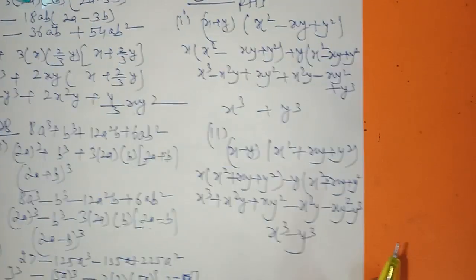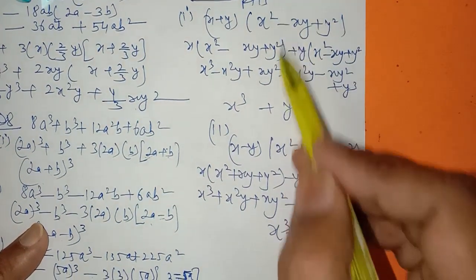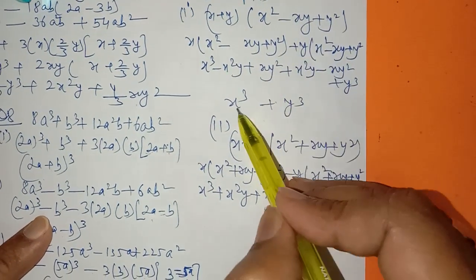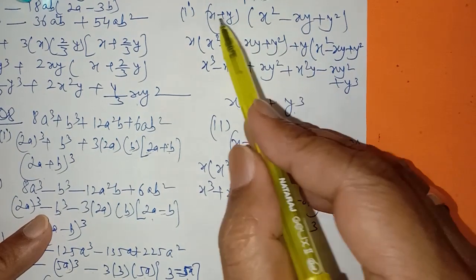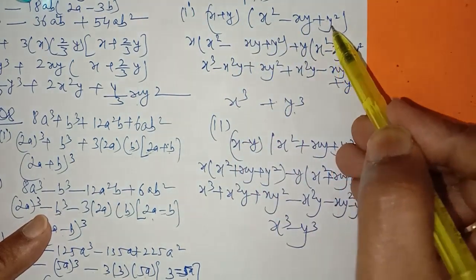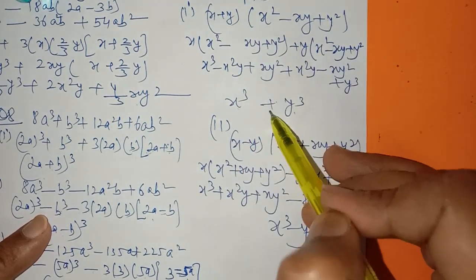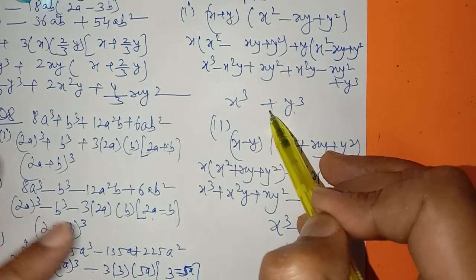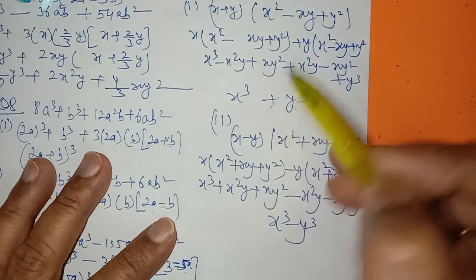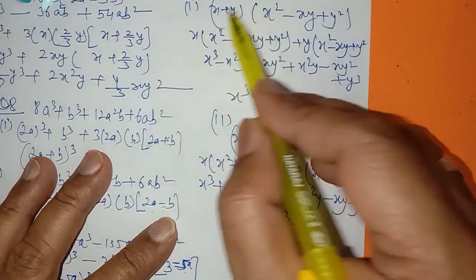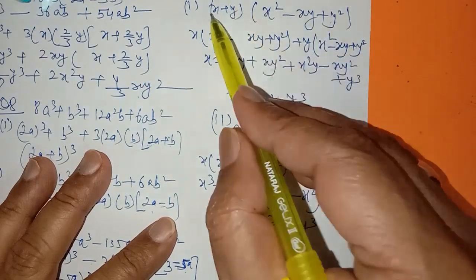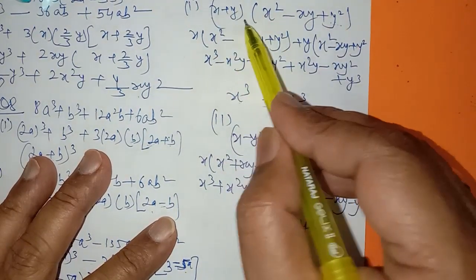Now in question number 9, there is a formula you also need to learn: x³ plus y³ equals (x plus y)(x² minus xy plus y²). You have to learn this formula. Now let us verify how this equals that: simply multiply — x multiplied by all three terms, and y multiplied by all three terms.